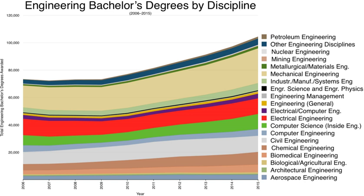Engineering training in South Africa is typically provided by universities, universities of technology, and colleges for technical and vocational education and training, previously further education and training. The qualifications provided by these institutions must have an Engineering Council of South Africa (ECSA) accreditation for graduates and diplomats to be registered as candidate-certificated engineers, candidate engineers, candidate engineering technologists, and candidate engineering technicians. The academic training performed by universities is typically in the form of a four-year BSc, and the course material must conform to the ECSA Exit Level Outcomes.